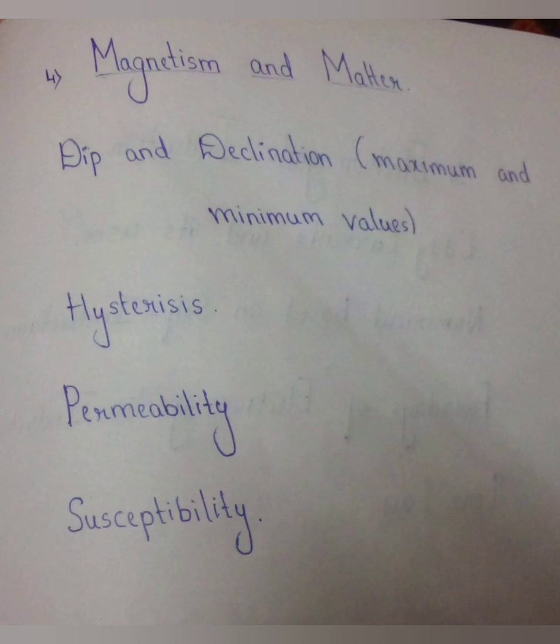From Chapter 4, Magnetism and Matter: angle of declination, maximum and minimum values, hysteresis, permeability, and susceptibility. These topics — one mark question each.